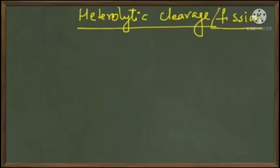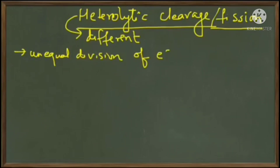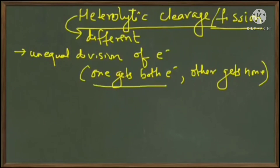Now let's talk about heterolytic fission. Hetero means different, so when a bond breaks heterolytically, the division of electrons is unequal. Since every bond has two electrons, one of these species will get both the electrons and the other will get none. The more electronegative species will take both electrons.